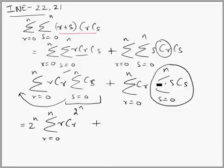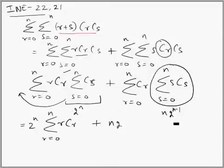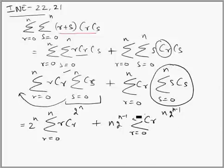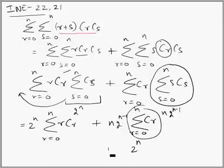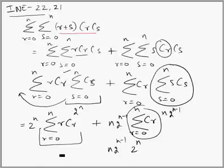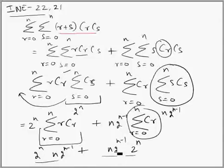We apply the formula: summation of r·Cr equals n·2^(n-1). We write the summation and take it out of the sigma sign because it is independent of r. The leftover is sigma of Cr (r varies from 0 to n), and this sigma equals 2^n. On the other side, applying the formula again gives n·2^(n-1). Both sides are equal, so the sum is double of either one.